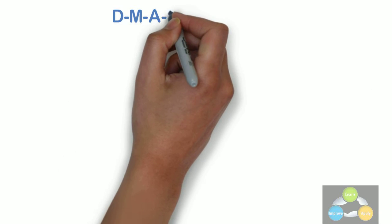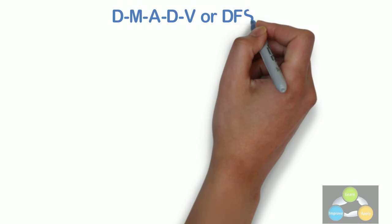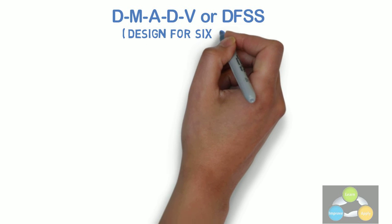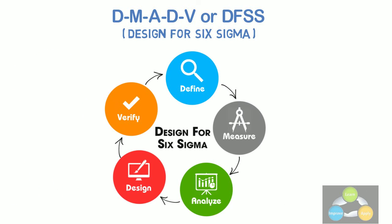DMADV or DFSS. The DMADV project methodology, also known as DFSS, i.e. Design for Six Sigma, also features five phases.